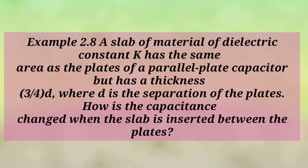A slab of material of dielectric constant K has the same area as a plate of parallel plate capacitor but has a thickness 3d/4, where d is the separation of the plates. How is the capacitance changed when the slab is inserted between the plates?